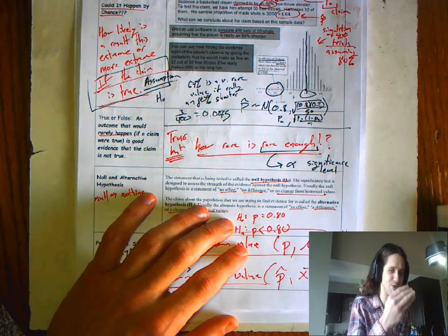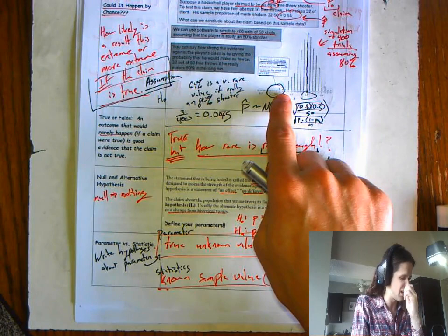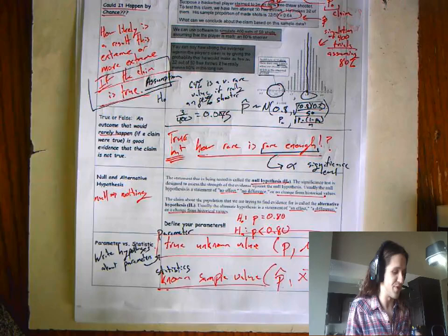She goes out, she shoots 64%. I say, okay, 80% shooters, they don't shoot 80% every time. Maybe there's some variability. Maybe she just had a bad day. How likely is it that a true 80% shooter would shoot 64% or worse?